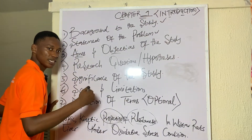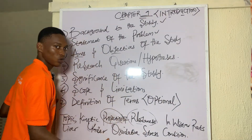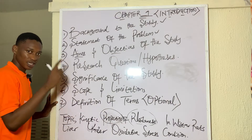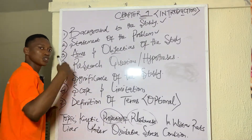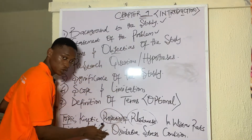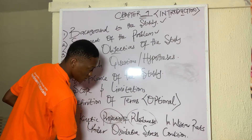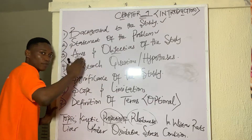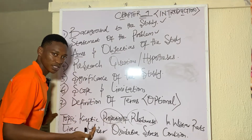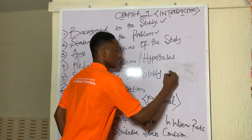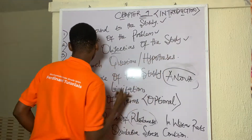Now for the objectives of the study: the first objective is to determine the Km and Vmax of the rhodanese enzyme under normal and oxidative stress conditions. The second objective is to compare enzyme activity across normal and oxidative stress groups. The third objective is to analyze statistical significance using an ANOVA table. Those are the aims and objectives for this particular study.